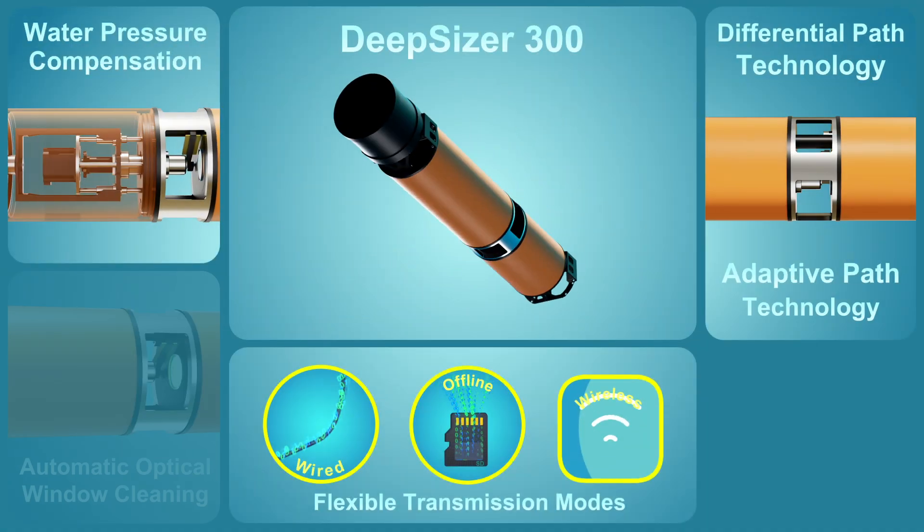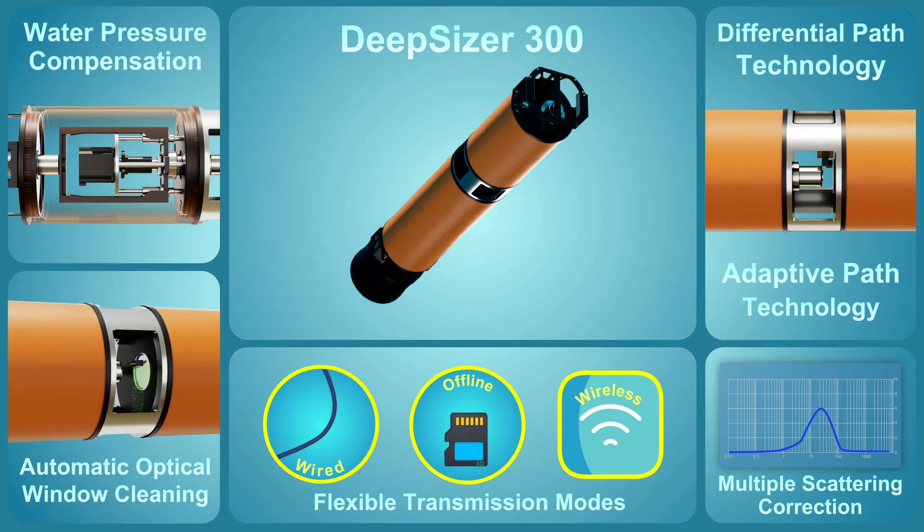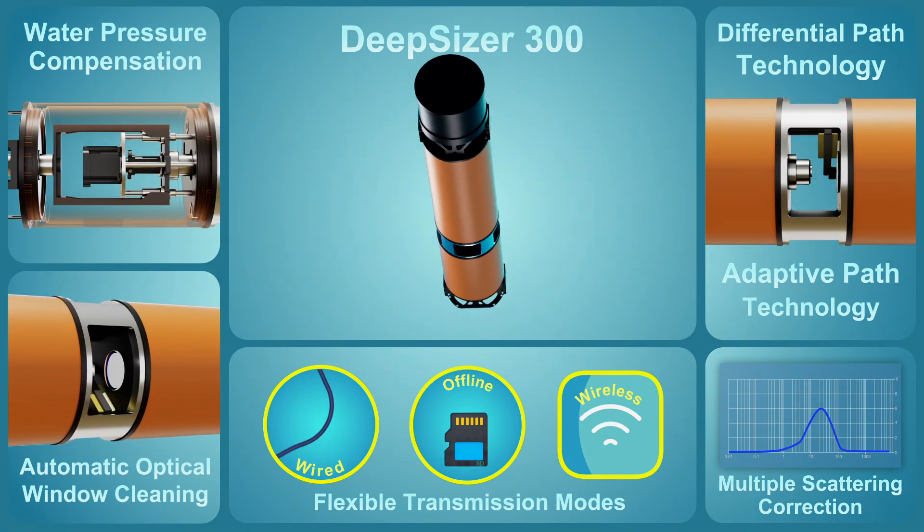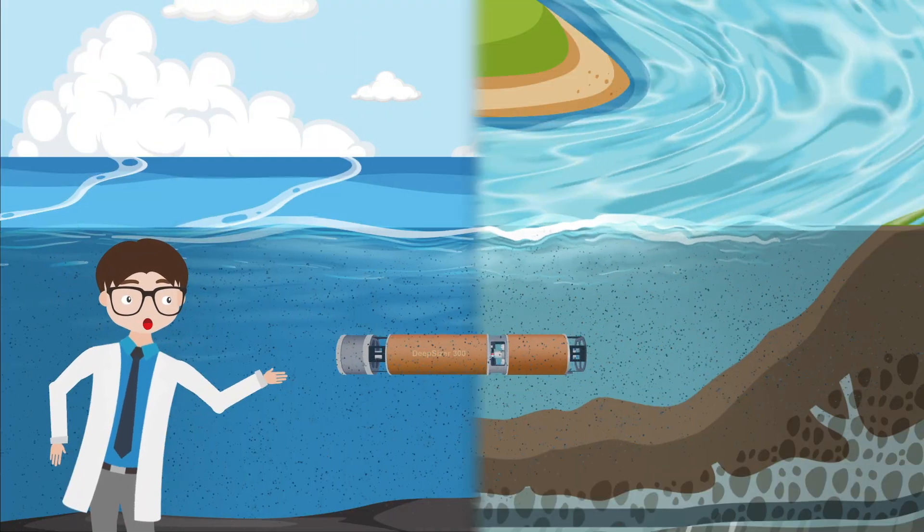With all these combined, the DeepSizer 300 delivers precision, flexibility and reliable real-time monitoring, even in the toughest river and coastal conditions.